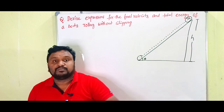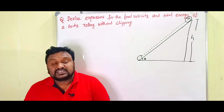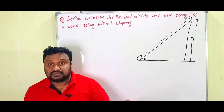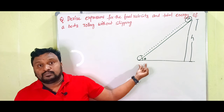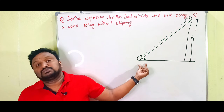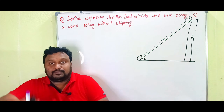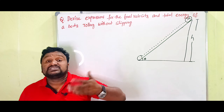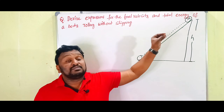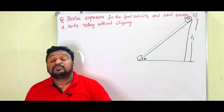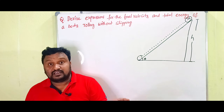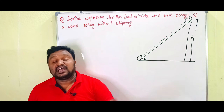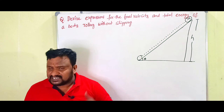Once the body is rolling down without slipping, it consists of two types of motion: one is translatory motion and the next is rotary motion. The initial position is at the top and the final position is at the bottom — this translatory motion is along the plane. When it is rolling, it has angular motion — rotary motion — and rotational kinetic energy. So the energy experienced by the body is in the form of translational kinetic energy and rotational kinetic energy.